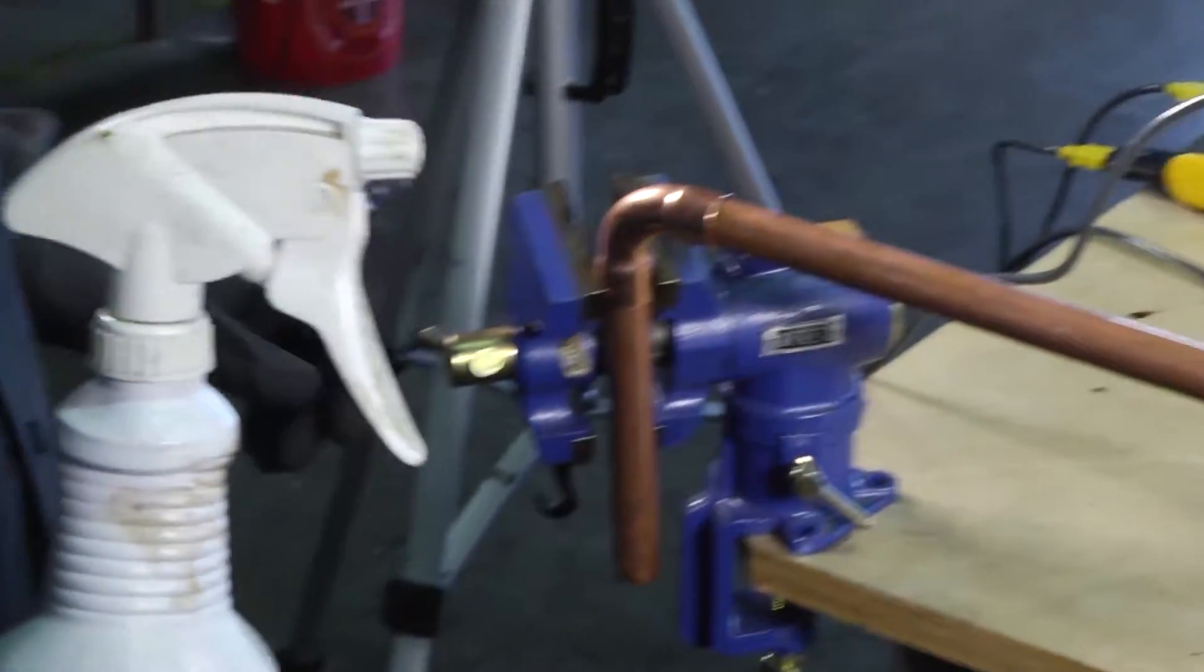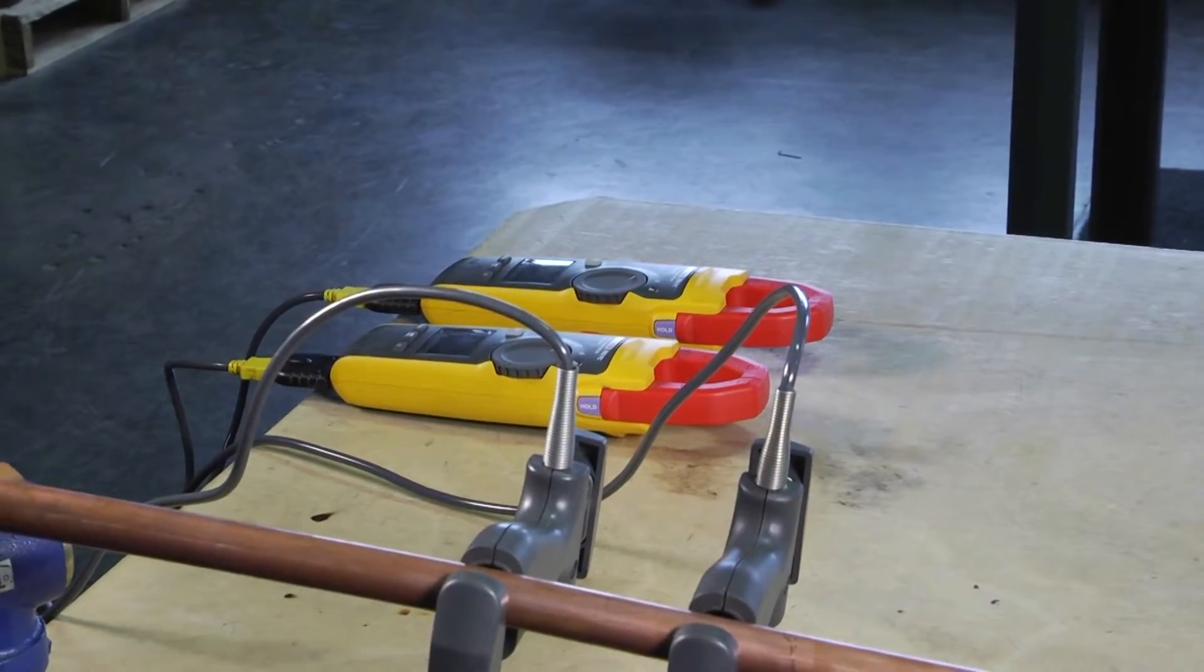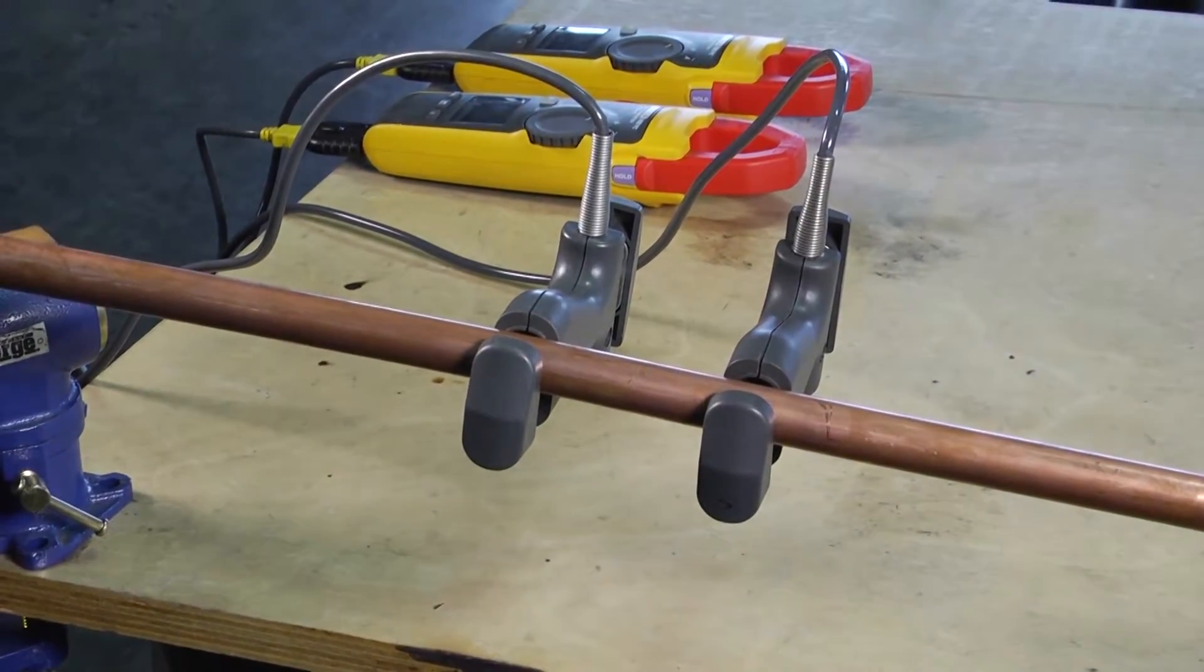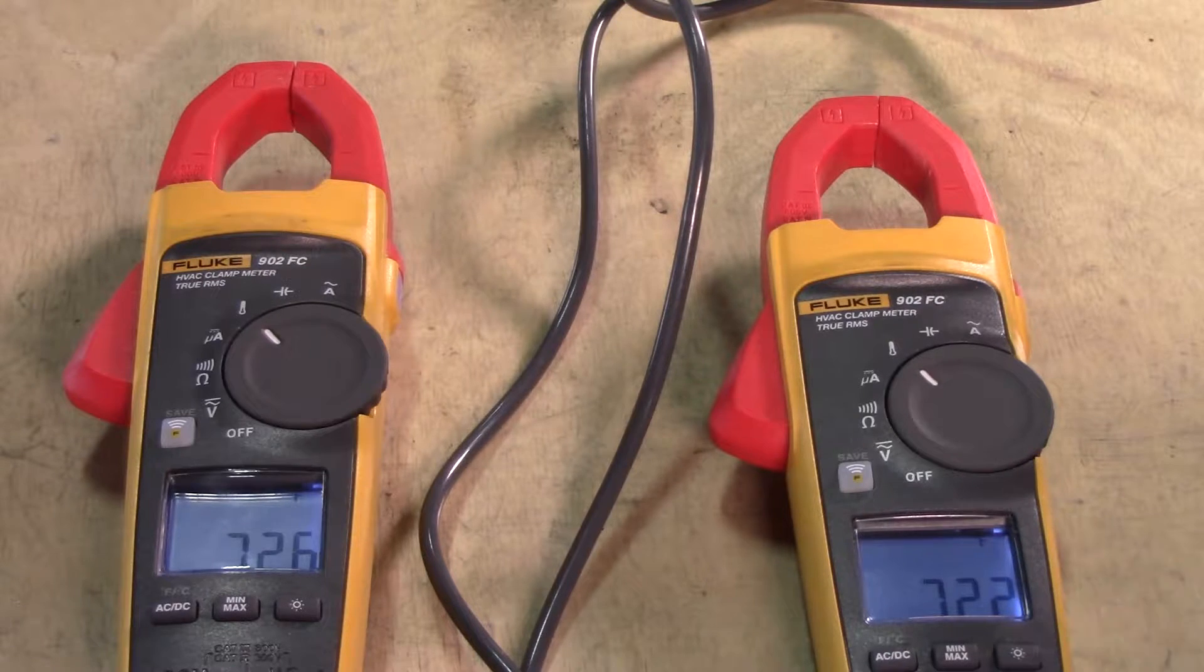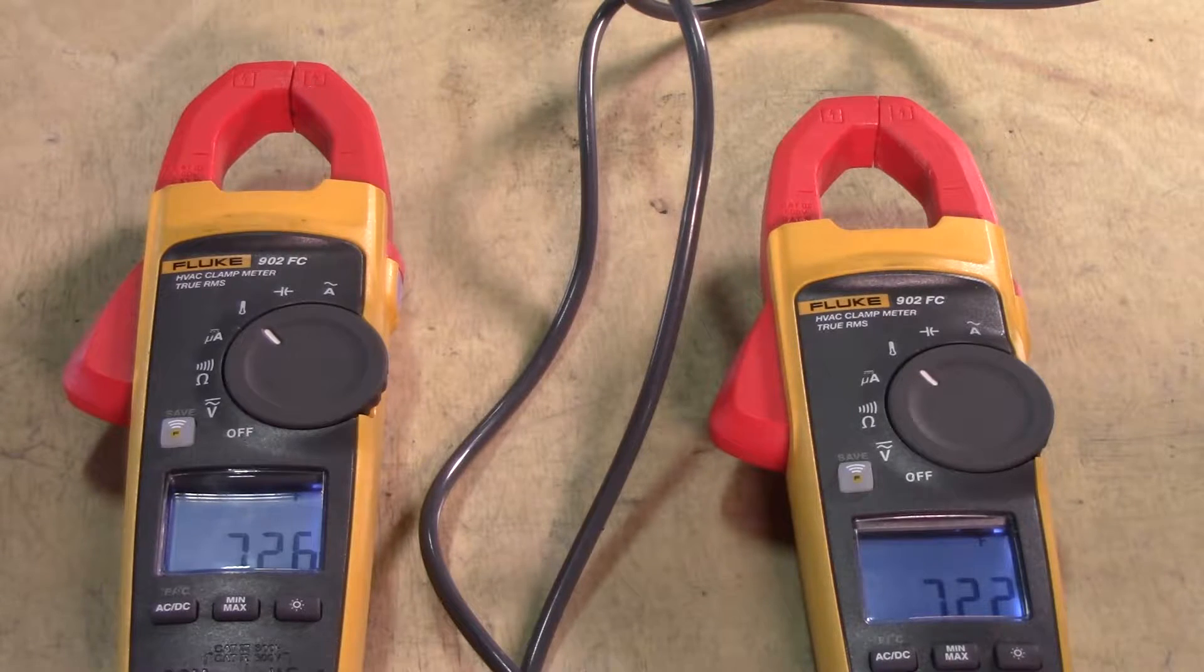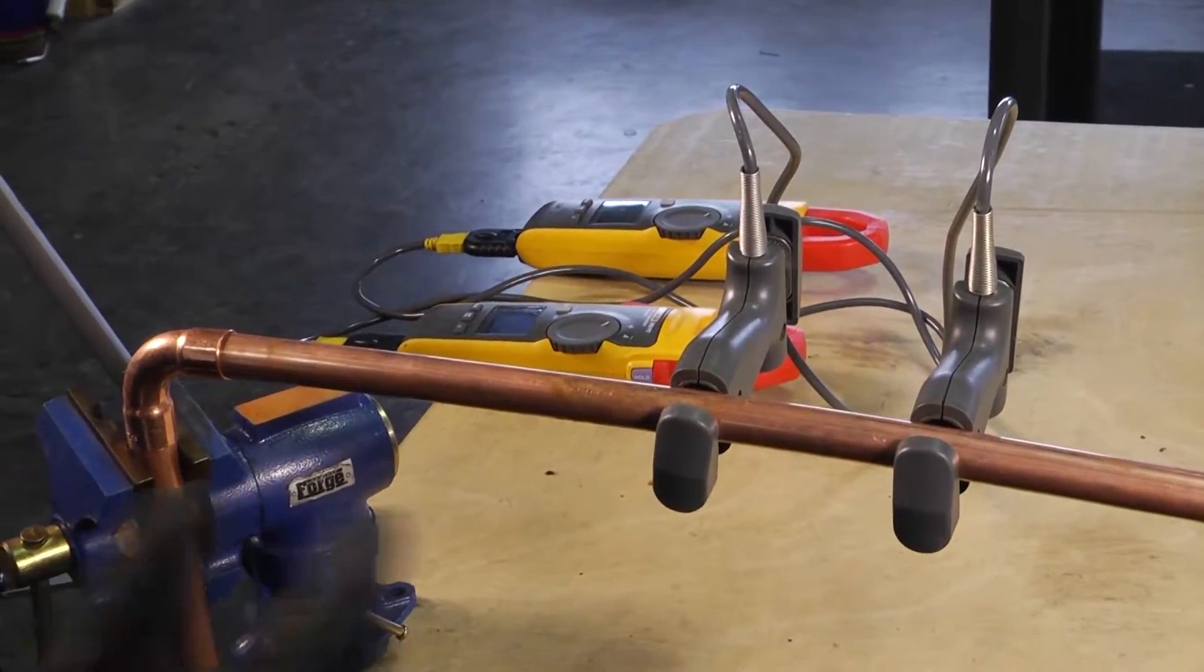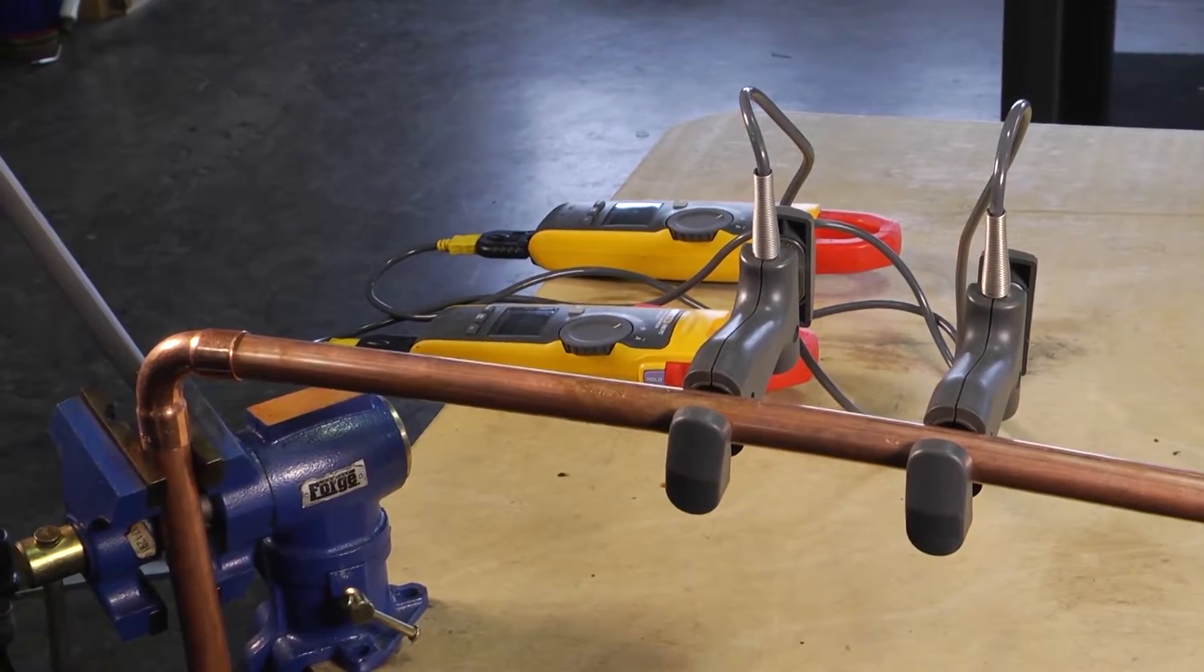Over here we've got our meter set up and you can see that right now it's taking a temperature reading of the pipe that we have with our temperature clamps on them. So each meter is set at a different clamp. One's reading 72.6 and the other one's reading 72.2, so you can see that they're relatively close. What we're going to do is spray our Cool Gel right here in the middle of our pipe in between the two temperature sensors.